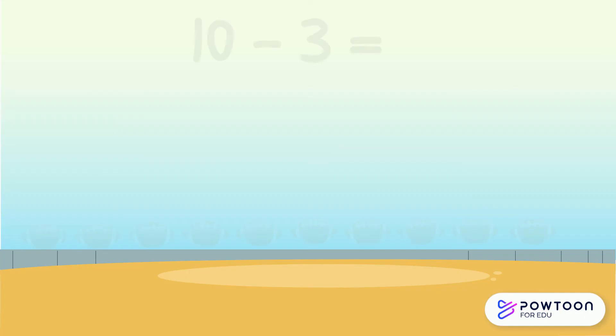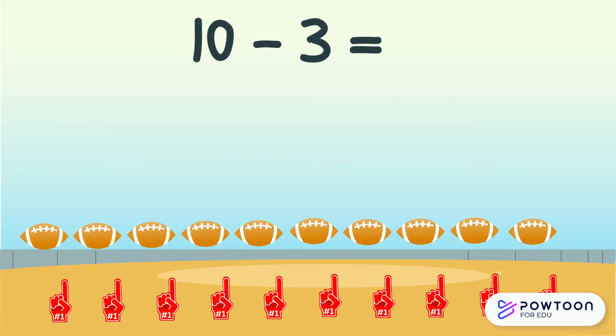Well done! Oh, ten footballs. We've got ten footballs and we need to take away three. Can you cross out three with me? One, two, three. Now let's find out how many we have left over. One, two, three, four, five, six, seven. Ten take away three equals seven. Great work.